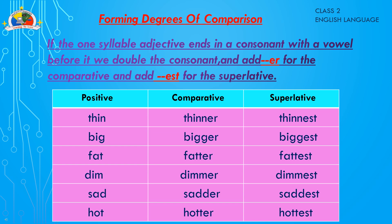When the positive degree ends in a consonant with a vowel before it, double the consonant then add '-er' for the comparative and '-est' for the superlative. For example: thin → thinner → thinnest; big → bigger → biggest; fat → fatter → fattest; dim → dimmer → dimmest; sad → sadder → saddest; hot → hotter → hottest.